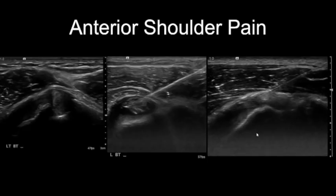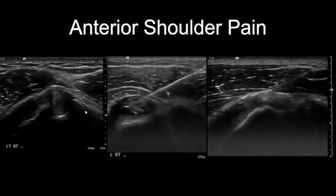You can also inject these under ultrasound guidance. Here's a patient with anterior shoulder pain — the biceps tendon is very thickened, extending beyond the margin of the bicipital groove, and is hypoechoic. We can advance a needle, avoid the tendon, and inject into the tendon sheath. If there's fluid in the tendon sheath it's a much easier target. The hypoechoic material you see here is actually the steroid as it was being injected. If there's no fluid, you can advance the needle and park it next to the biceps tendon and inject.